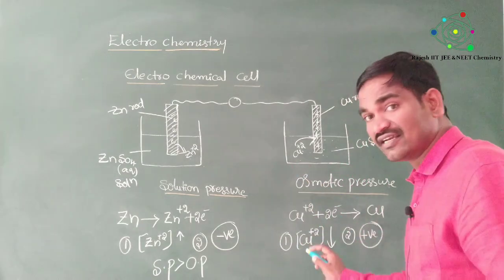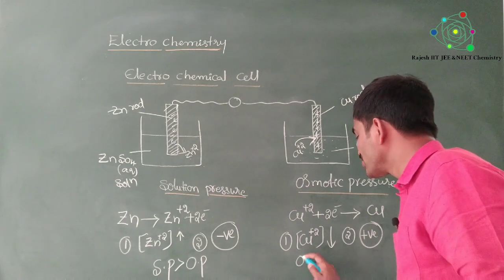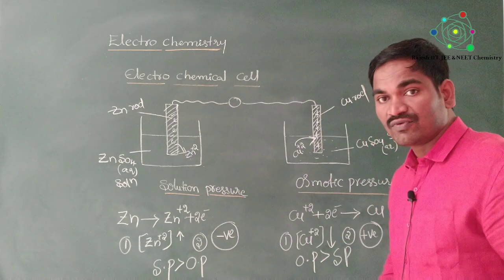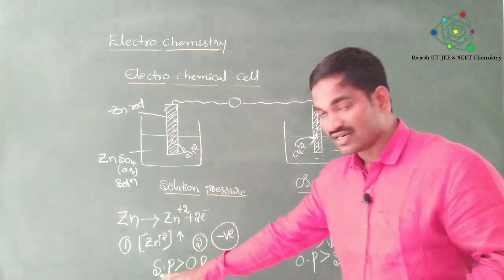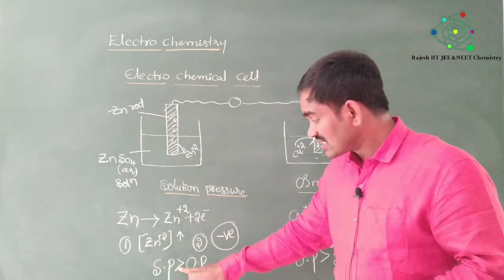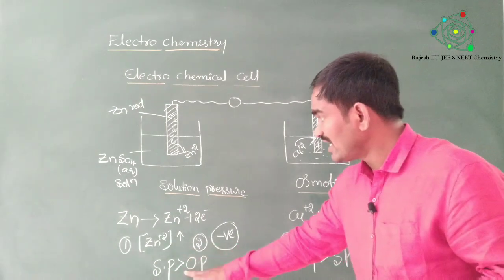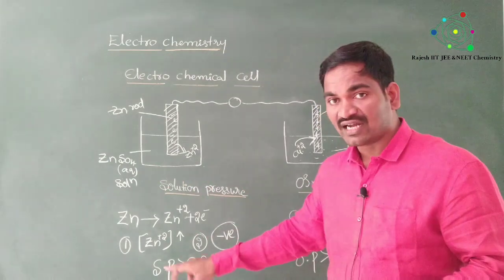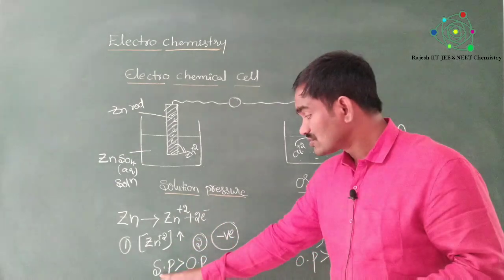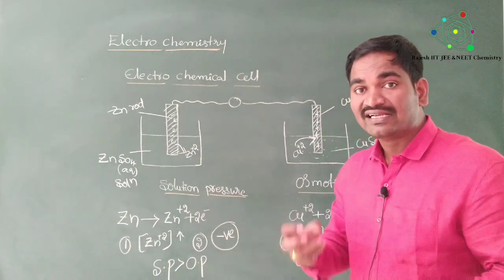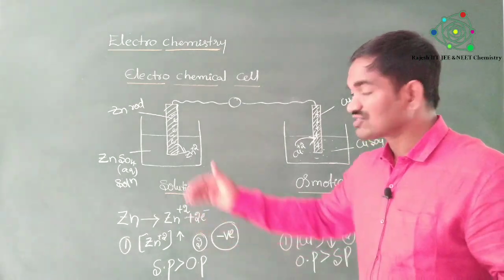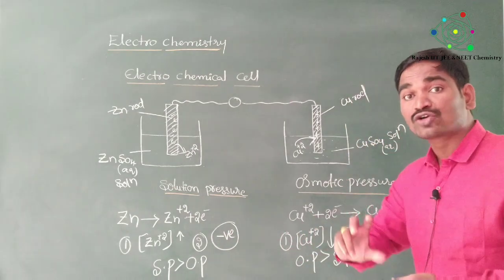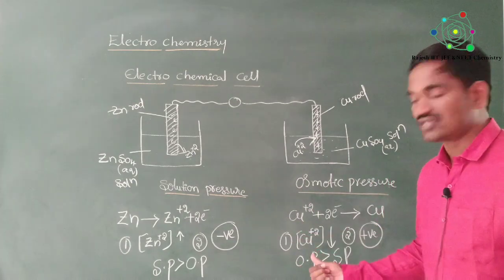Here, osmotic pressure is dominating over solution pressure. One major point: whenever solution pressure is greater than osmotic pressure, oxidation takes place — that is, loss of electrons. Wherever the half cell has high solution pressure, de-electronation takes place. Conversely, where osmotic pressure is more, electronation — that is, gain of electrons — takes place.